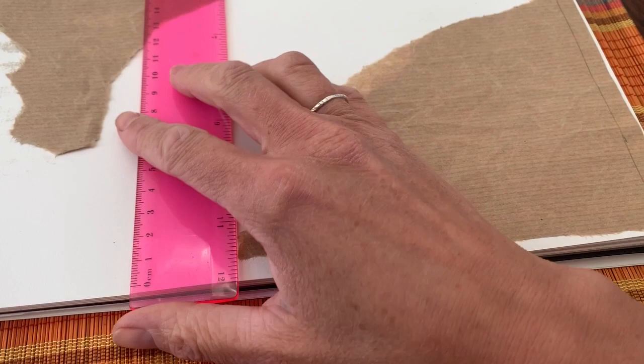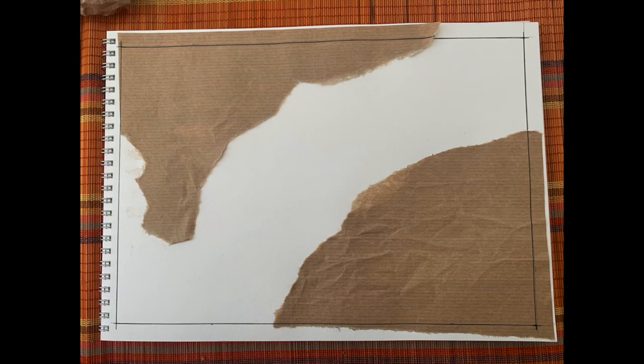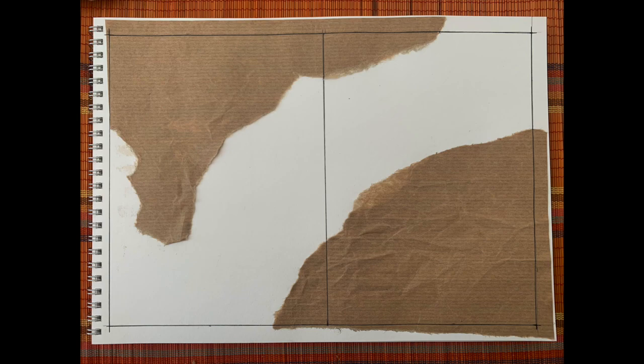To add a border around the page, use your ruler to measure one centimeter from the edge at one point, then measure one centimeter again at another point. If you only measure in one point, you could end up with a wonky line. Once you've got those two points, join the dots together and repeat all the way around the page.